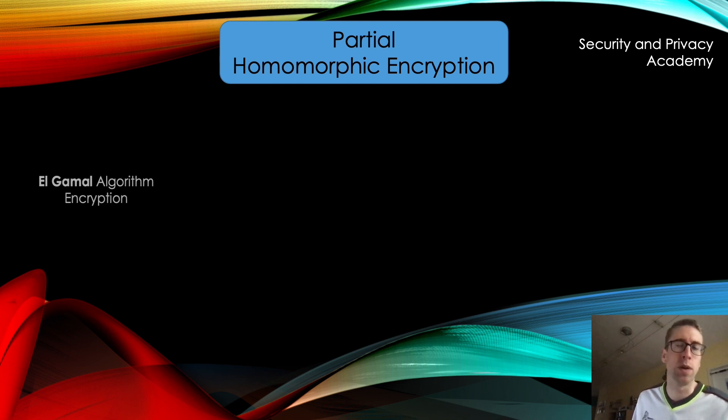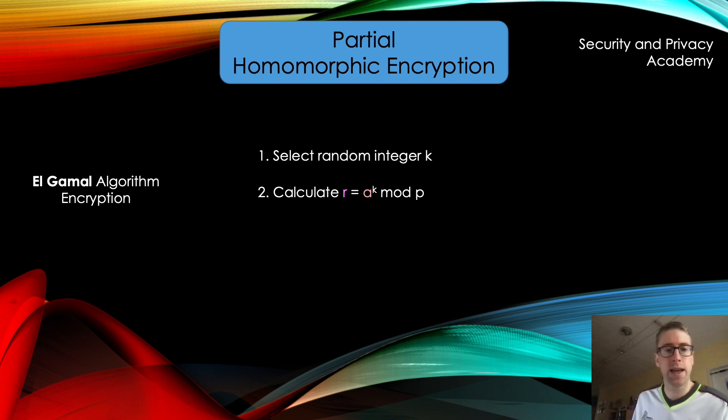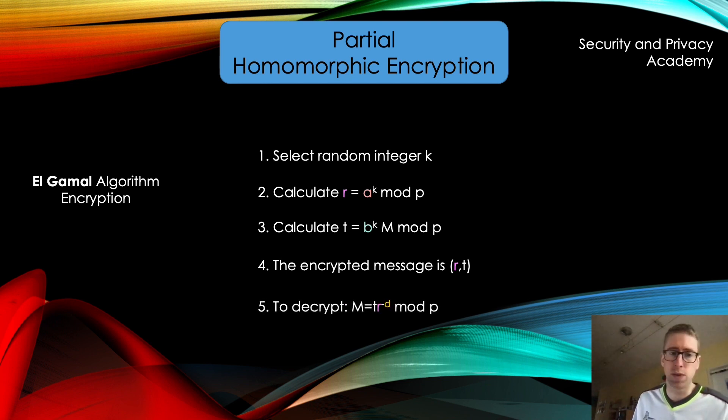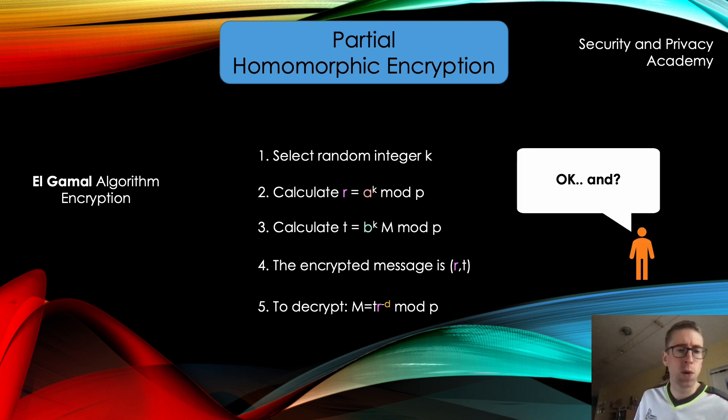So next, how do we encrypt using El Gamal? First of all, we select a random integer K. We calculate R equals A to the power of K mod P. And we calculate T, which is B to the power of K times M. M is of course the message we want to encrypt, mod P. The encrypted message is now this tuple here of R and T. And to decrypt the message, we simply add the negative private key as an exponent to R, multiply with T to get the original message.